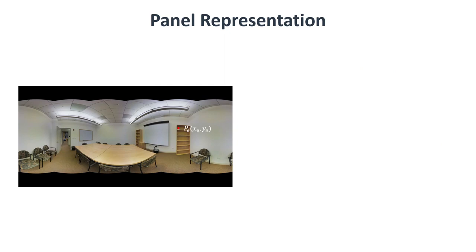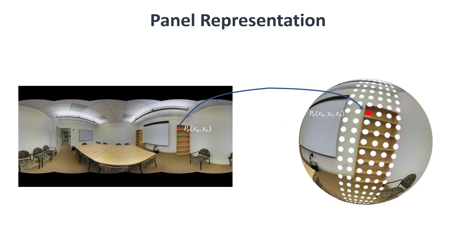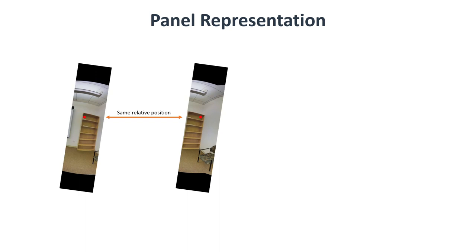At the meantime, we generate the global geometry of the panorama. For a pixel PE on a panorama, we map it to a unisphere and get its global 3D coordinates xs, ys, and zs. Since all panels share a same kind of distortion, the relative position of a pixel to the panel where it is located is also important.